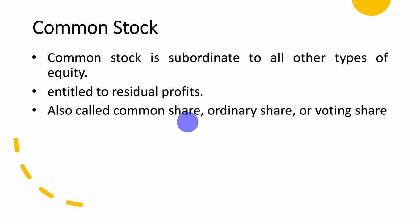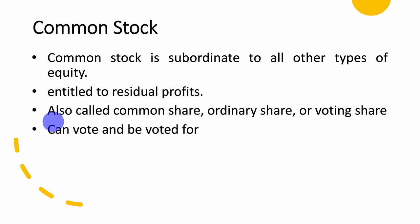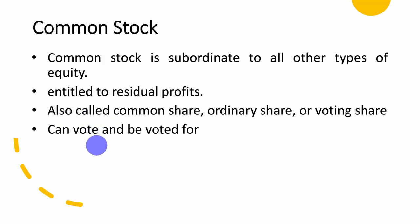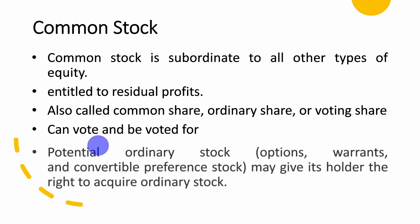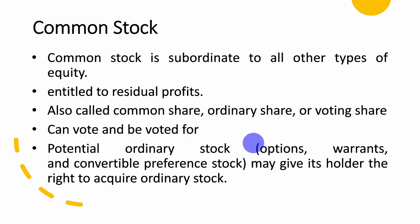Common stock is also referred to as common shares, ordinary shares, or voting shares. Common stockholders can vote and be voted for — they can elect the board of directors or contest for board positions. They can also vote on decisions outlined in the articles of association or by-laws of the company. Additionally, potential stockholders with options, warrants, or convertible preferred stock may have the right to acquire ordinary stock.